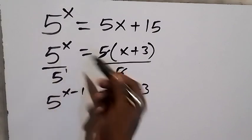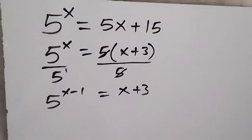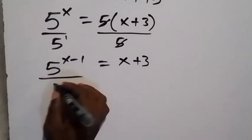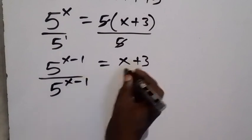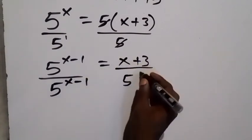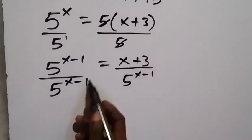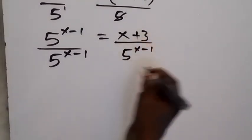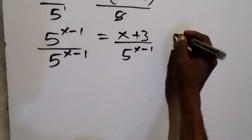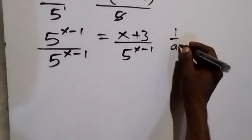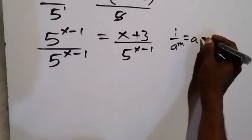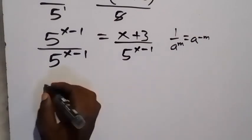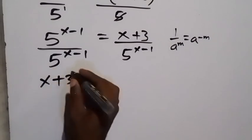From the next step, let's divide both sides by 5 raised to power x minus 1. Divide this side by 5 raised to power x minus 1 and divide this side by 5 raised to power x minus 1, such that the left side will become 1. Writing the right hand side in another way: since 1 over a raised to power m can be written as a raised to power minus m, we separate 5 raised to power x minus 1 and write it again — we have x plus 3 multiplied by 5 raised to power minus x plus 1.